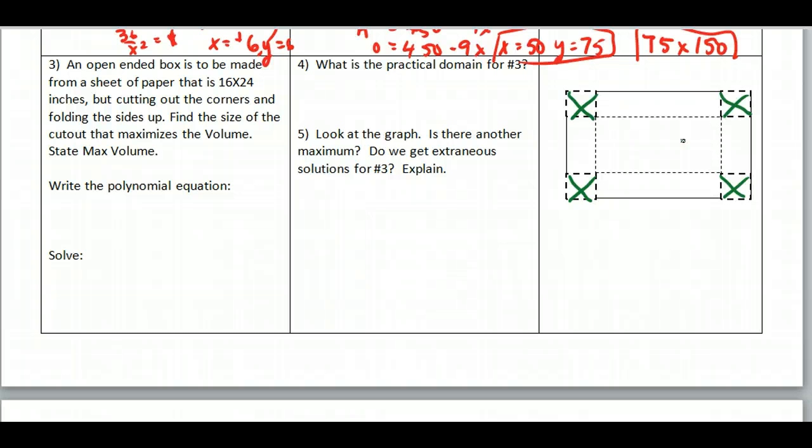And what we want to do is we want to try to fold this up so it makes an open-ended box. Well with that open-ended box, we want to maximize the volume for a given size sheet of paper that we give you. So if you read these instructions here, I have this dimension which is 24, this dimension here which is 16.